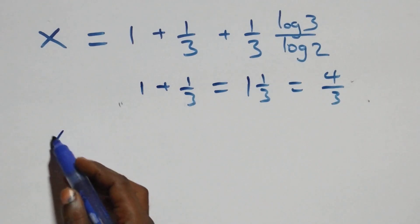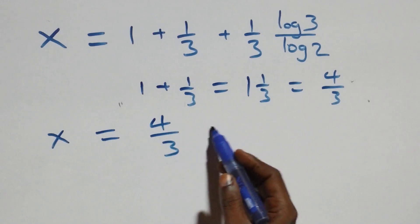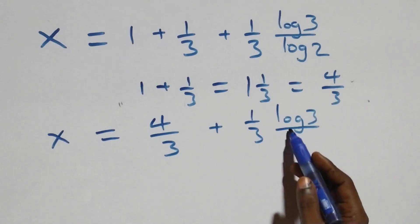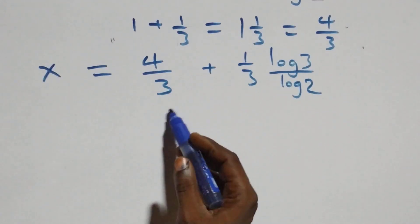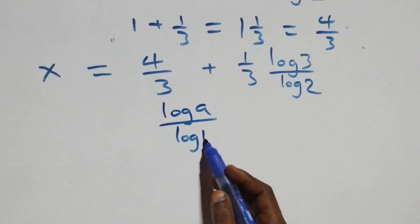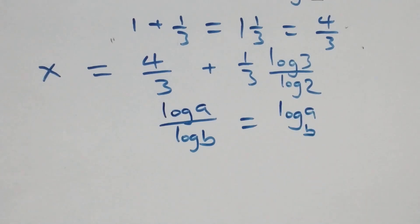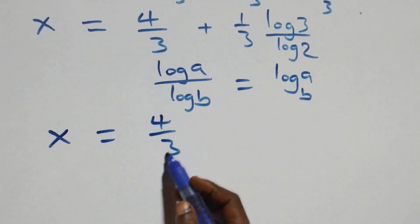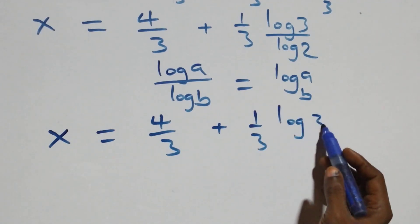So all we have becomes x = 4/3 + (1/3)·(log 3 over log 2). Then we apply the change of base formula: log a over log b can be expressed as log a to base b. So what we have becomes x = 4/3 + (1/3)·log₂3.